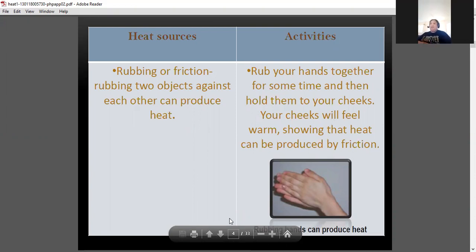So for example, you will create a video demonstrating each source. Rubbing or friction, rubbing of two objects with each other can produce heat. So you will be making a demonstration. So you will rub your hands. While rubbing your hands, you will say, we have different heat sources. Number one, it is done by rubbing of two objects or creating a friction. So one of the best example of this is you rub your hands. Like that, you will make a video of that.